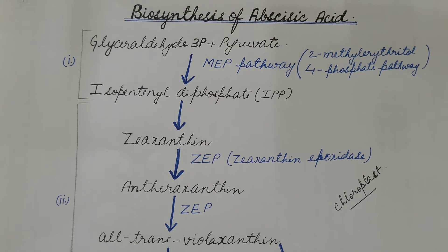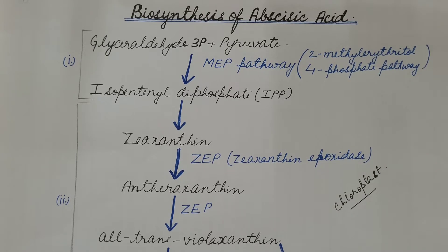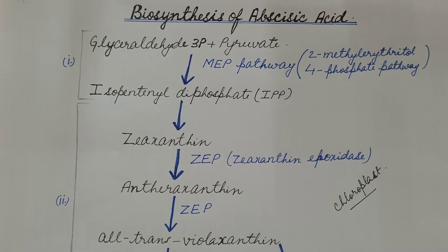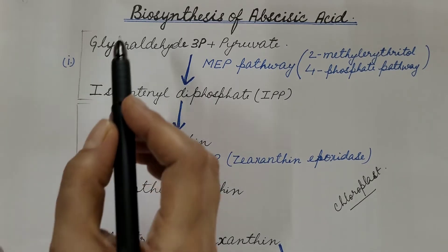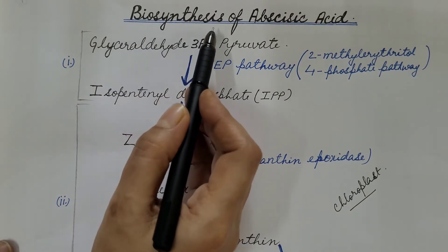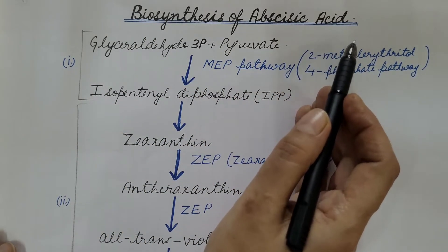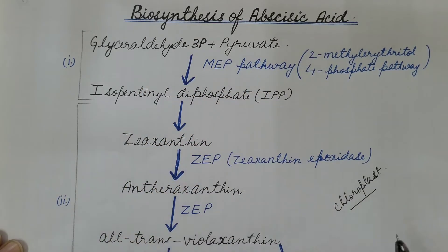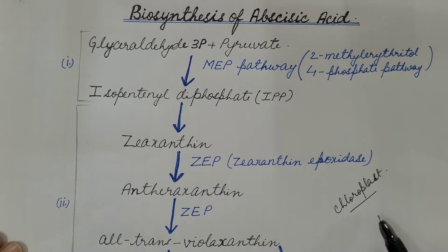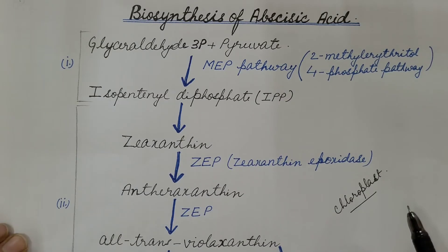Hello friends, we have started with the discussion of abscisic acid phytohormone. In the last video, we already discussed about its introduction, discovery of abscisic acid, its chemical nature, its structure, its distribution in plants, and physiological effects of abscisic acid. Today in this video, we are going to discuss about biosynthesis of abscisic acid. This biosynthesis takes place in chloroplast followed by cytosol. So let us see its different steps one by one.